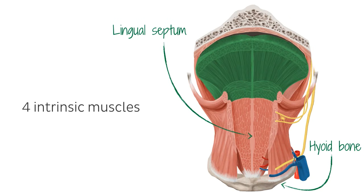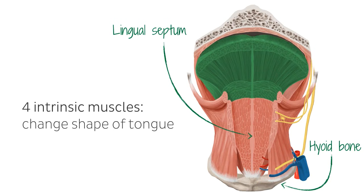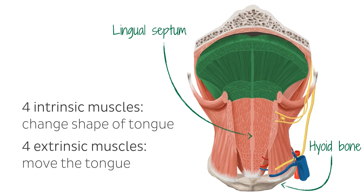Four of these muscles are intrinsic muscles, which are located within the tongue itself and are highlighted in this image. The other four muscles are located outside the tongue and are referred to as extrinsic muscles. The intrinsic muscles act to change the shape of the tongue, whereas the extrinsic muscles are involved in the movement of the tongue.